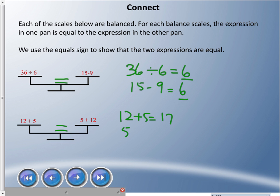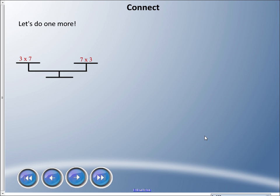We can use two different operations or expressions to show that this is equal. 5 plus 12 is 17, so these two expressions are equal. Let's do one more here. We have 3 times 7 and 7 times 3. Are they equal? 3 times 7 is 21, 7 times 3 is 21.